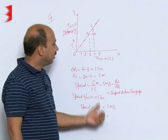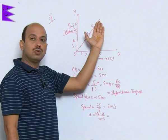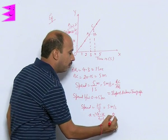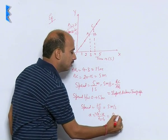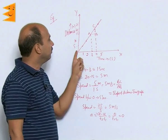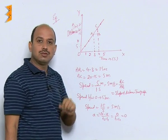Final and initial speed will remains same throughout the motion, time interval changing. So you will be getting here 0 upon T2 minus T1 is equal to 0 meter per second square. So acceleration for this uniform motion is 0.